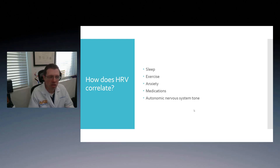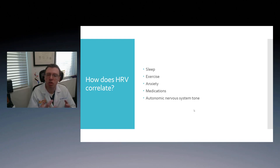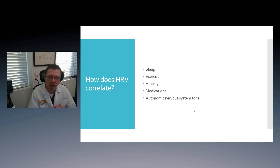Why we use HRV is to correlate it with the autonomic nervous system tone. High numbers typically correlate with parasympathetic tone being higher — that includes the vagus nerve — and lower numbers suggest sympathetic tone being higher.